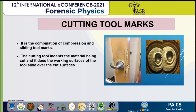Third is the cutting toolmarks. It is basically a combination of the compression and the sliding toolmark. The cutting tool tends the material being cut, and the working surface of the tool slides over the cut side. That means it is a combination of both compression and sliding — or we can say frictional — toolmarks.